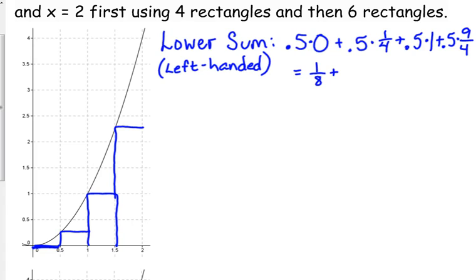So if I'm trying to sum these together without using a calculator, we've got 0 for the first one. We have a half times a fourth, that gives us an eighth. We have a half times 1, which is a half, but it's going to need to be over 8, so I'm going to write it as 4 over 8. And then a half times 9 fourths is 9 over 8. Add those together, we get 14 over 8, which simplifies to 7 over 4. That is our lower sum. It's 1.75 as a decimal.